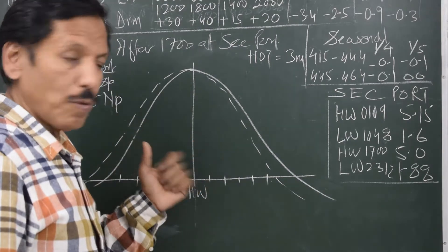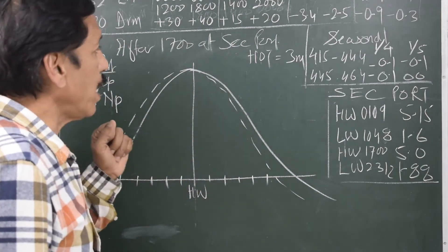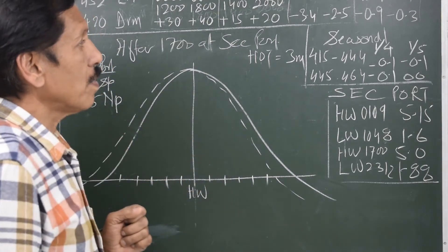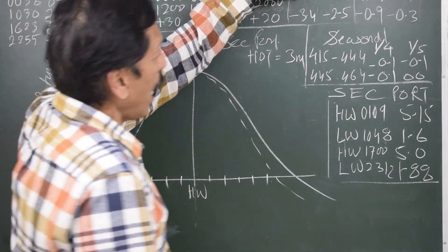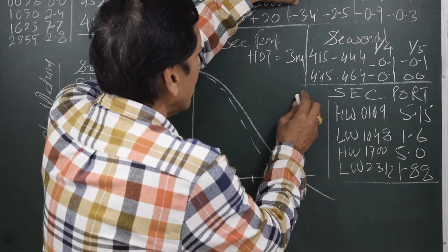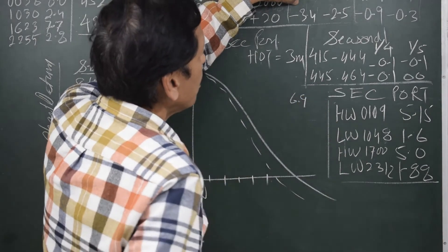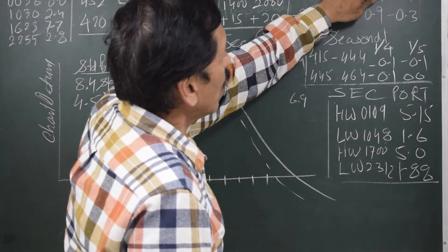But if you are going to use this curve for the secondary port, we must have the spring and neep range for the secondary port. So if you see mean high water spring at the secondary port becomes 6.9, and mean low water spring becomes 0.3.